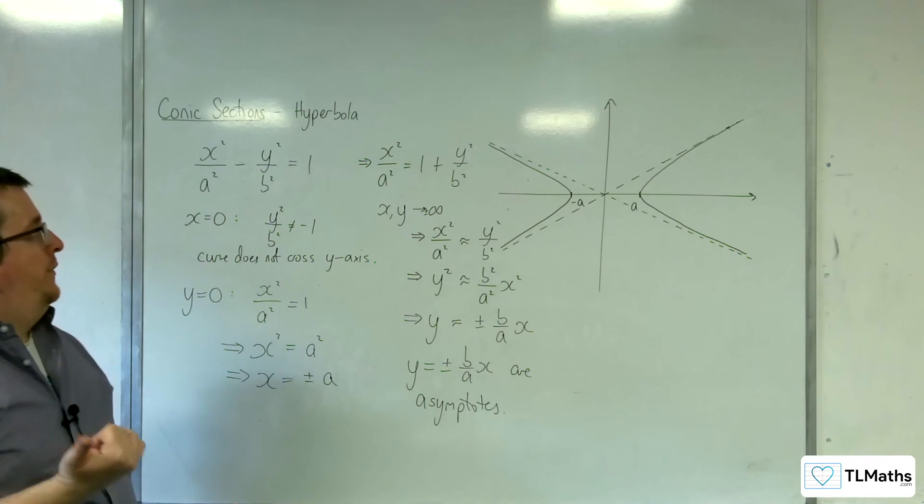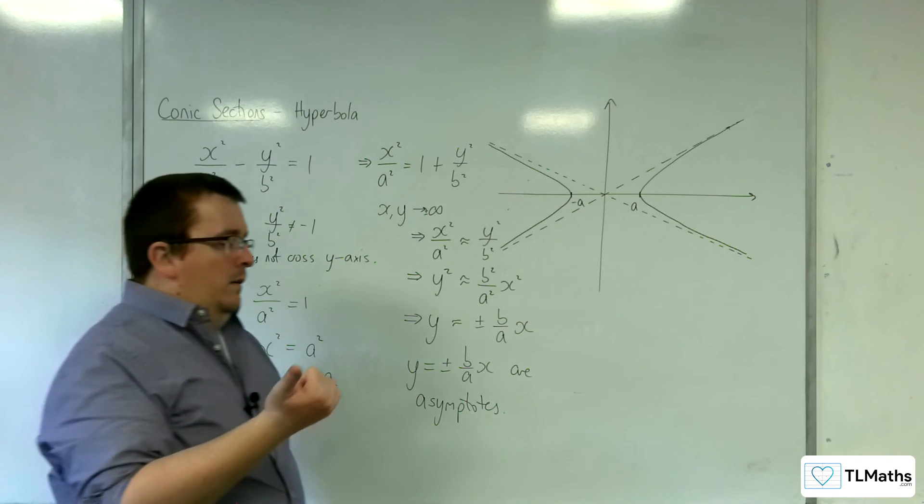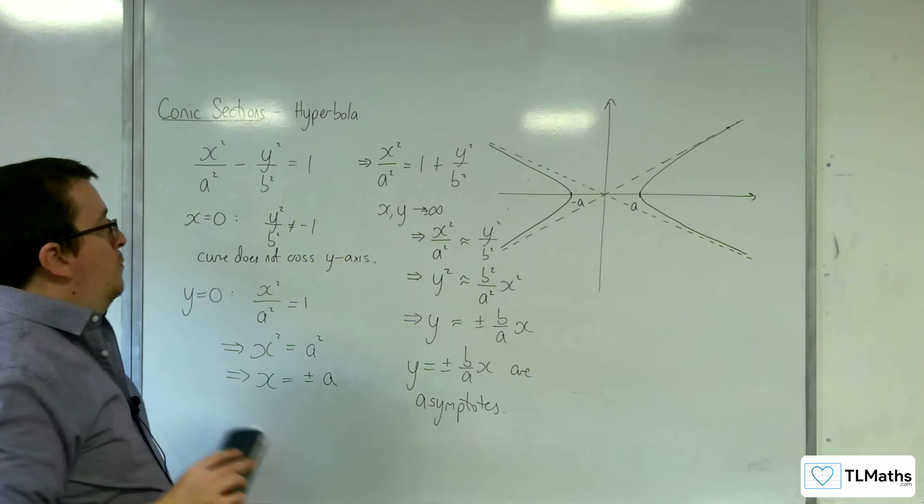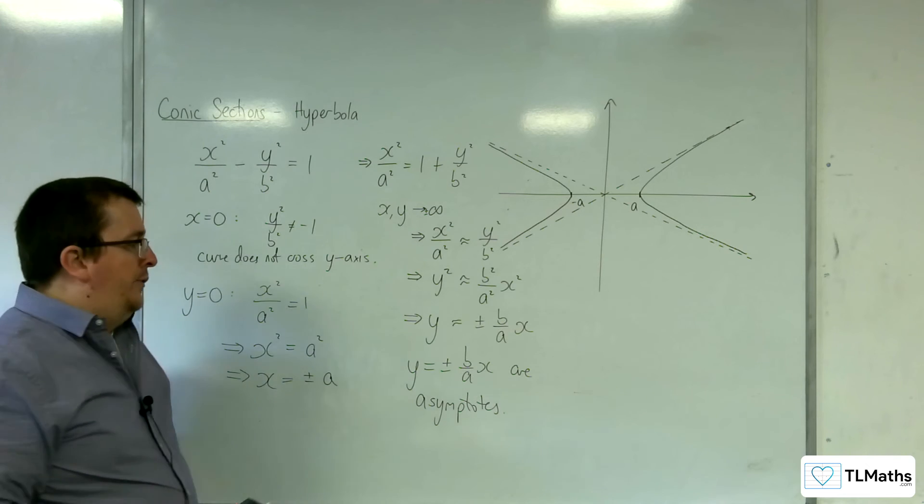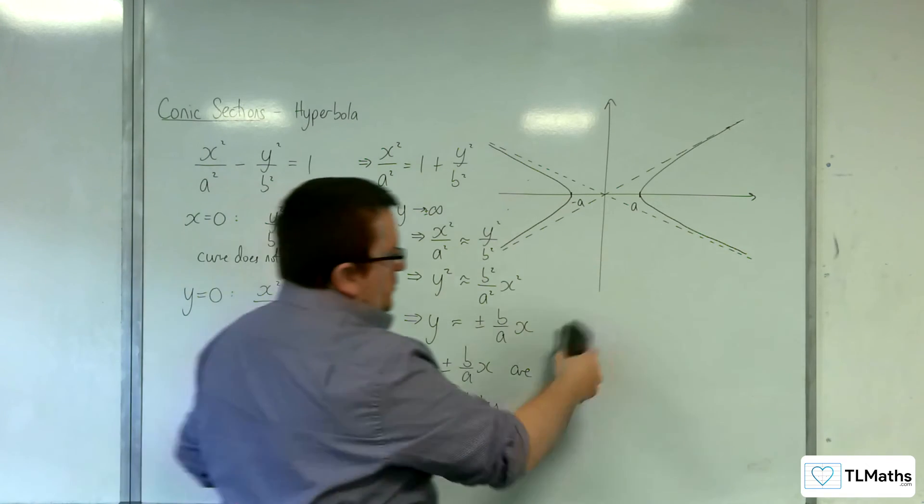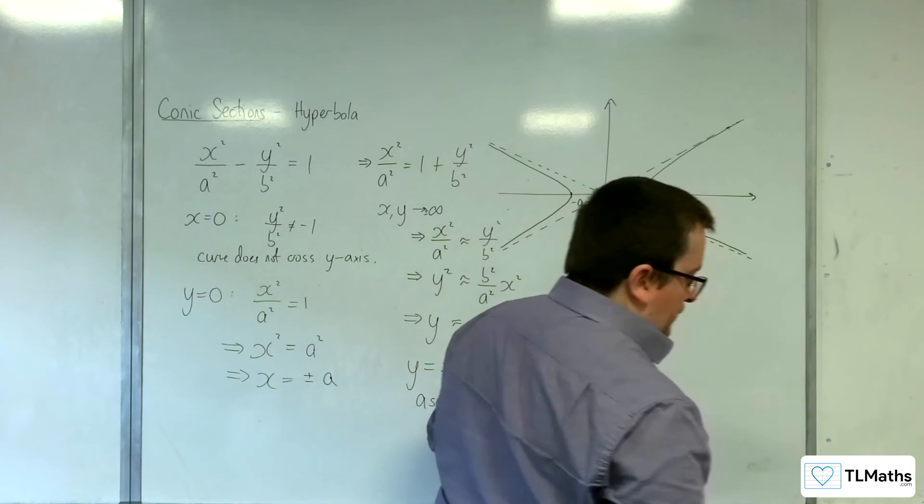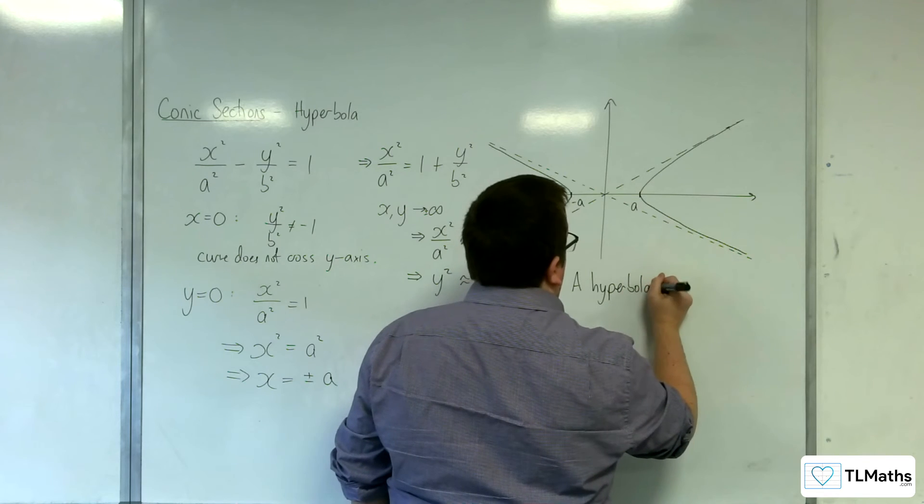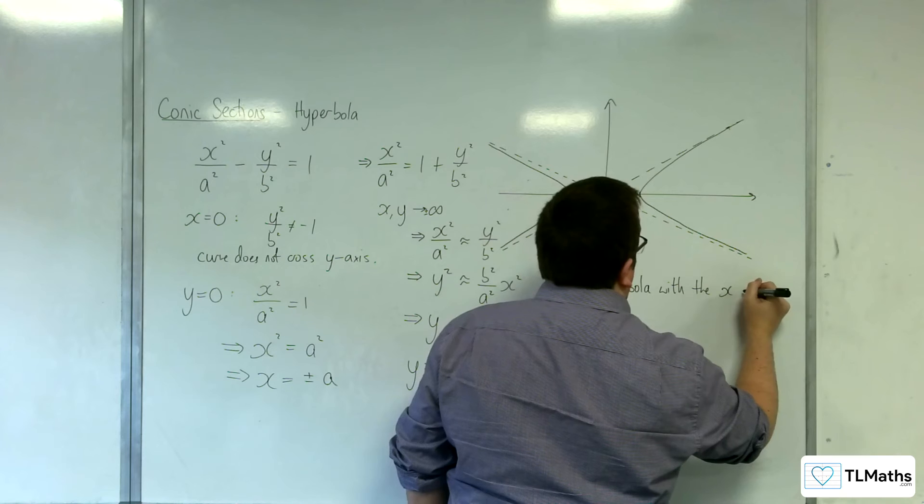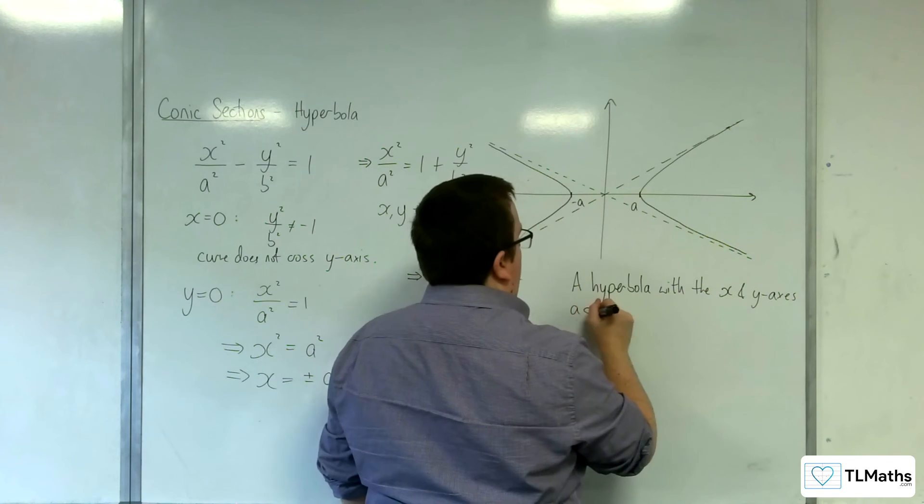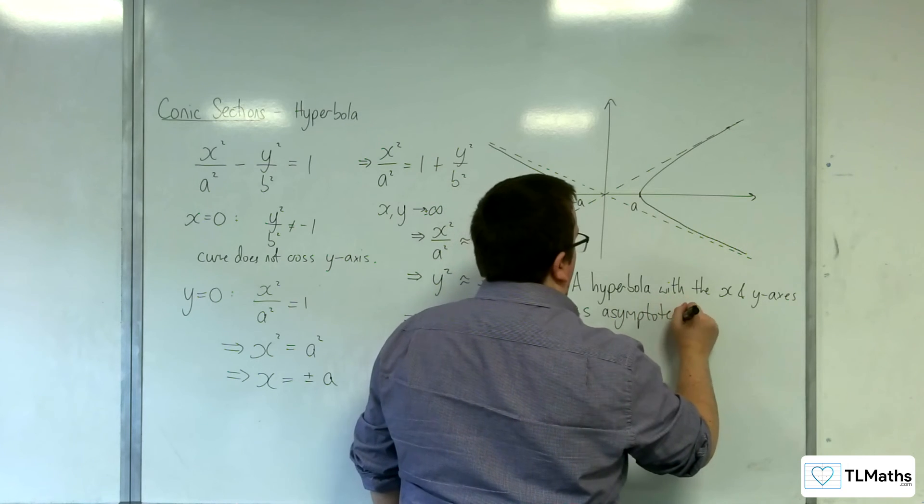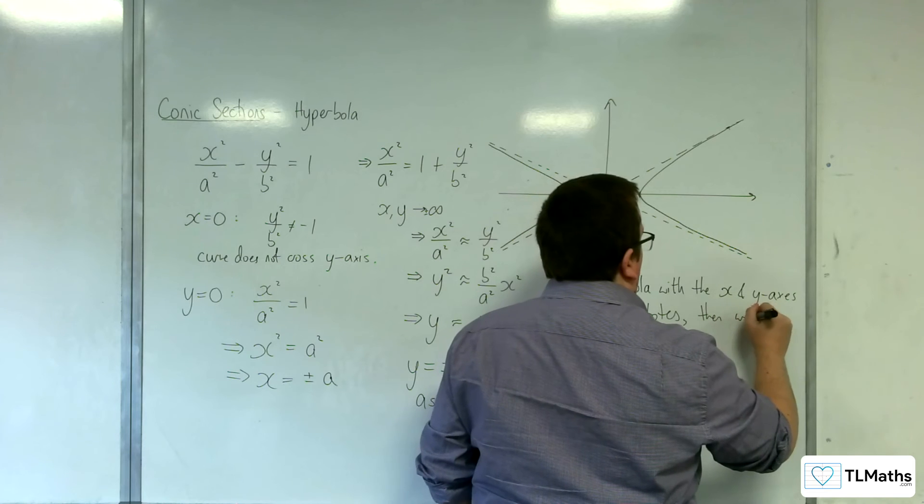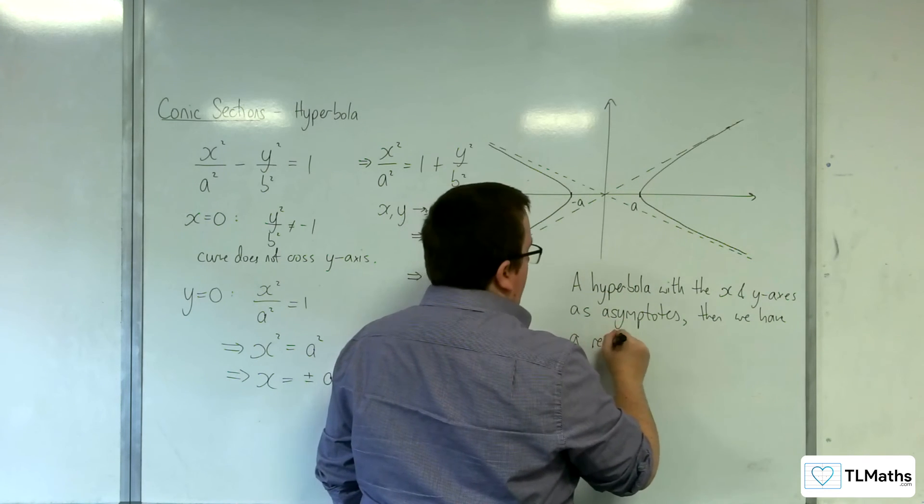Now, there is a particular type of hyperbola that we do need to be aware of. And that is a hyperbola that we all, we've all met before. And that's y equals 1 over x. So we say that a hyperbola with the x and y-axis as asymptotes, so if the x and y-axis are the asymptotes, then we have what's referred to as a rectangular hyperbola.